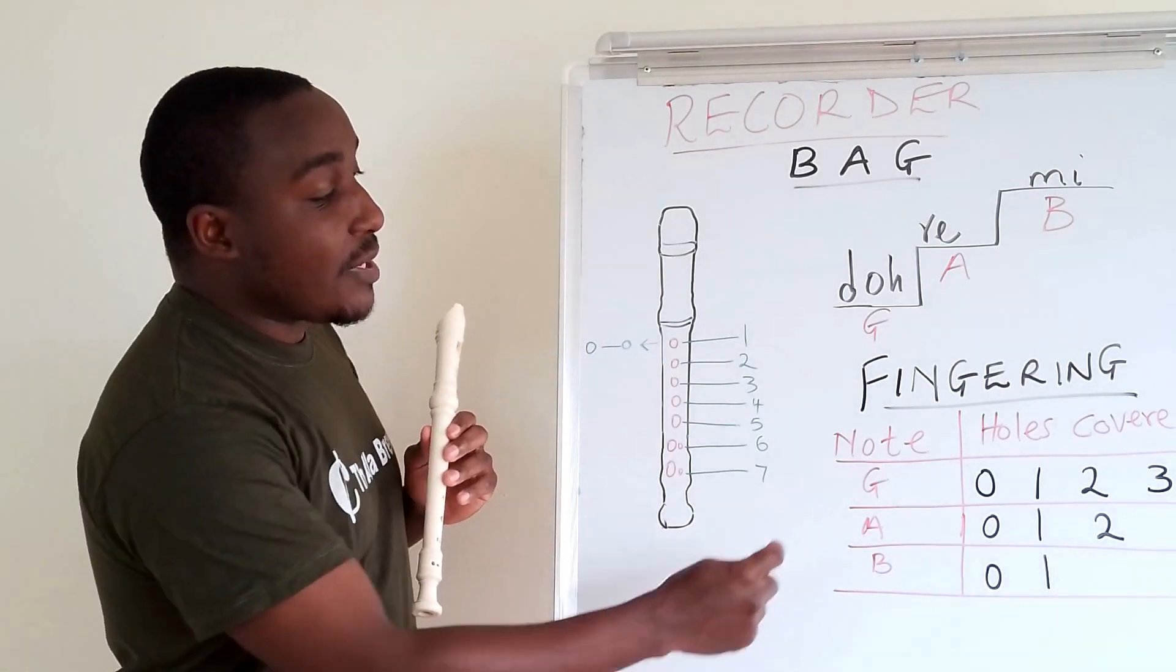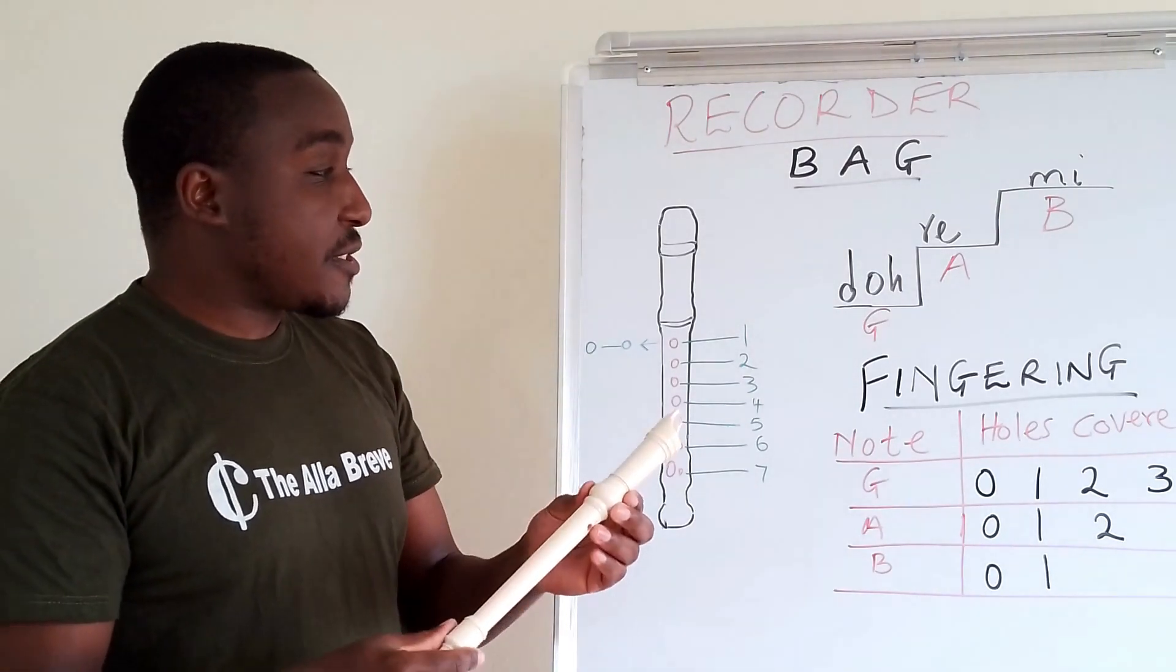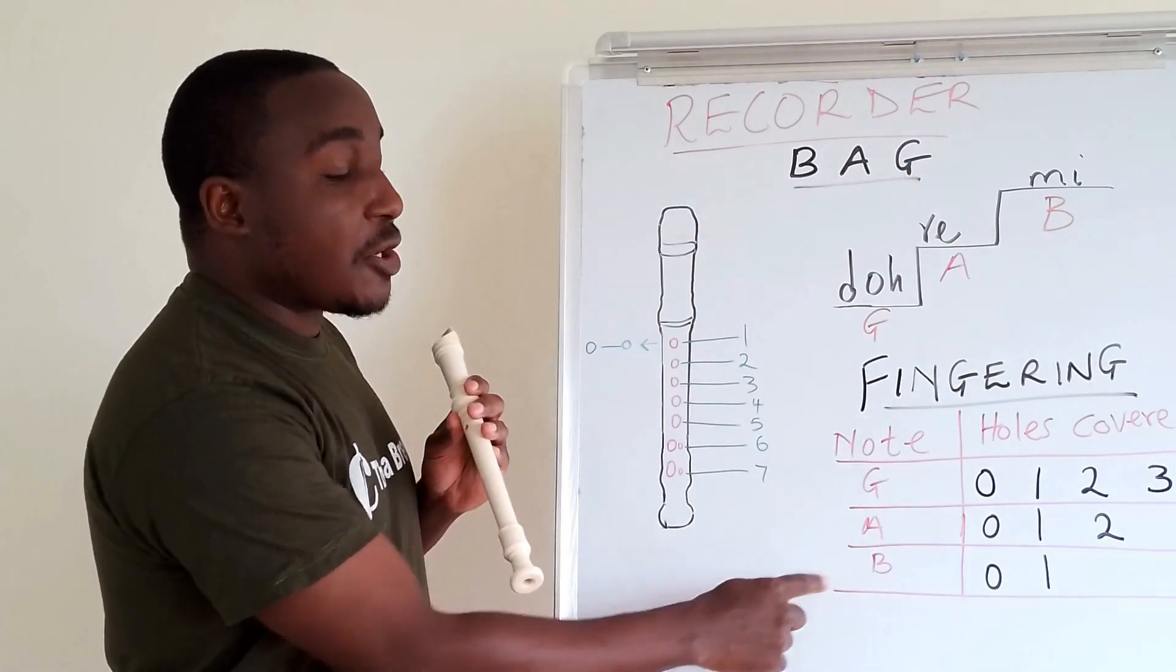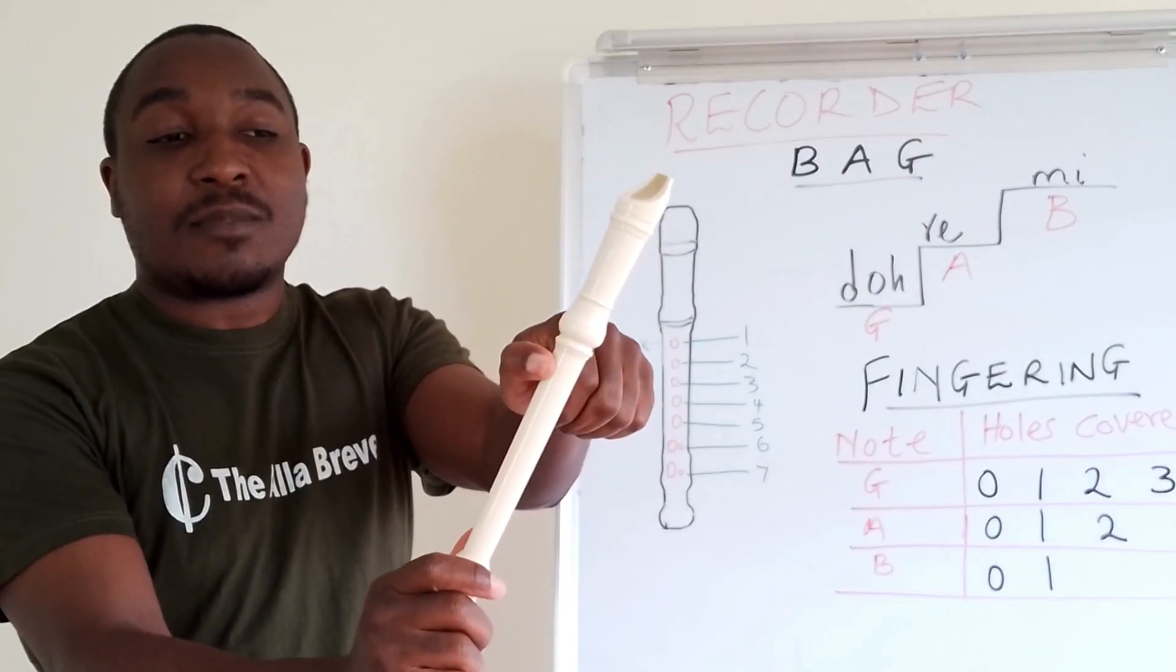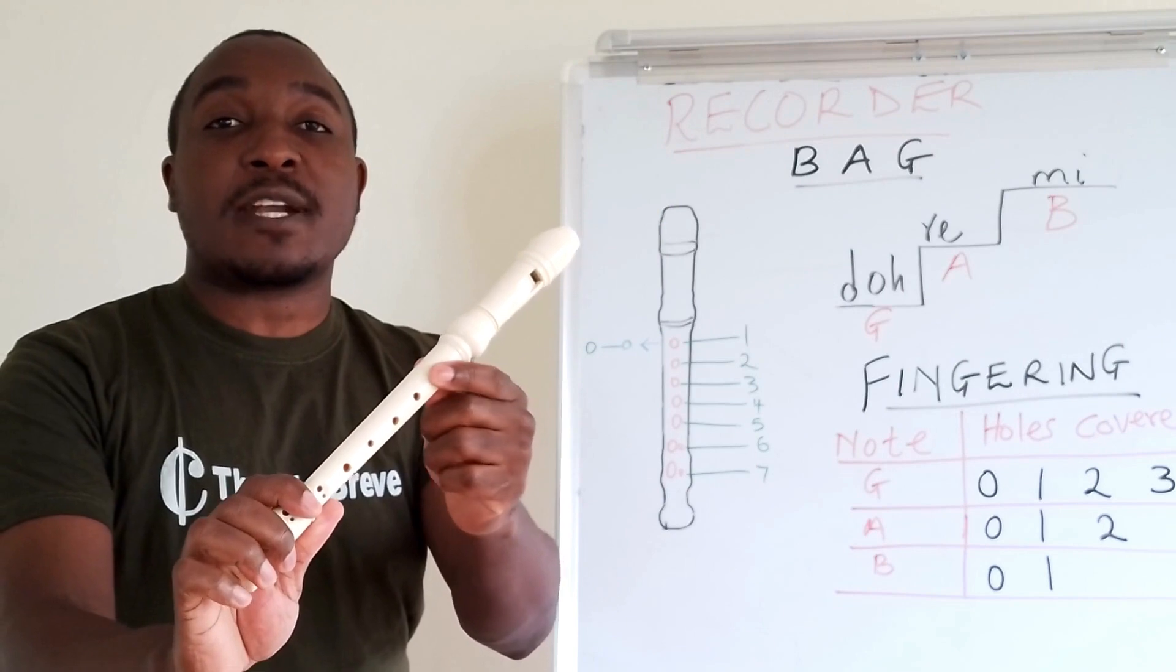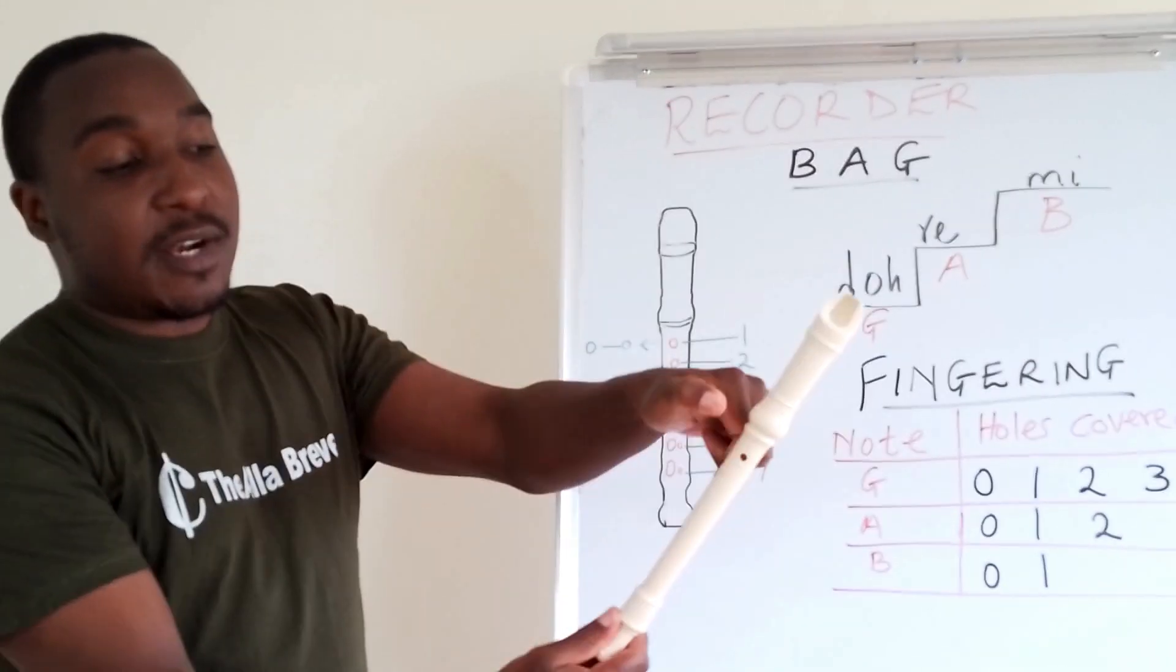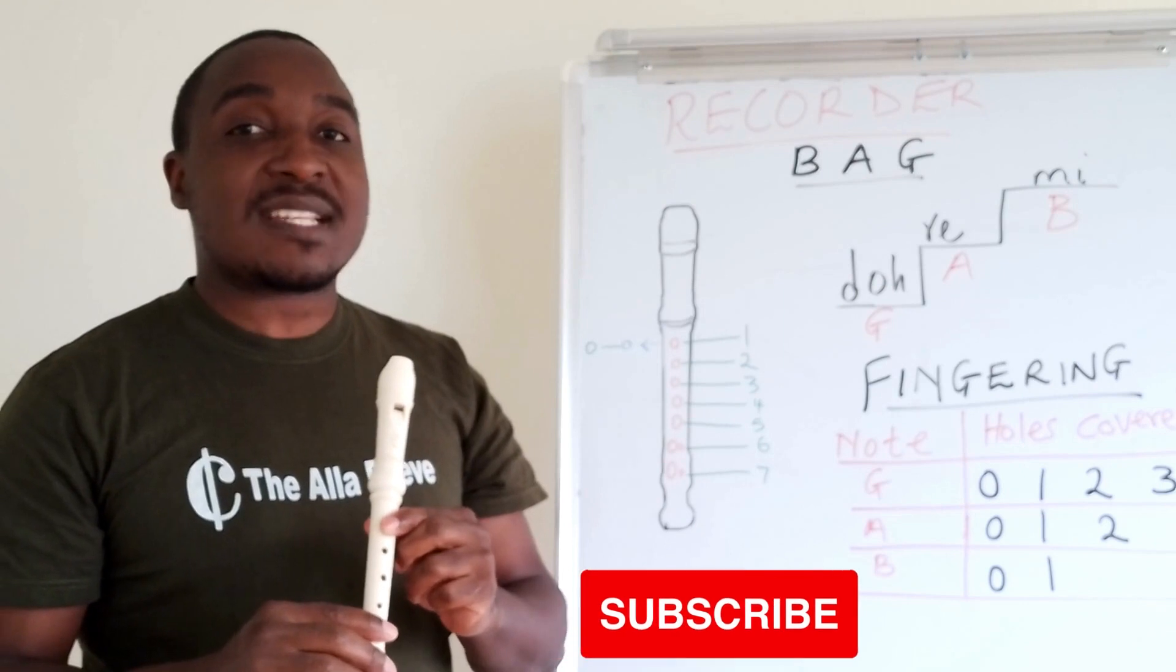So, before we play, we will start with how to place our fingers, the fingering of the notes. We will start with the simple one, NOTE B. To play NOTE B, you use the left thumb to cover the hole at the back, and the index finger of the left to cover the hole number 1. So, we cover 0 and 1. This is how NOTE B will sound.